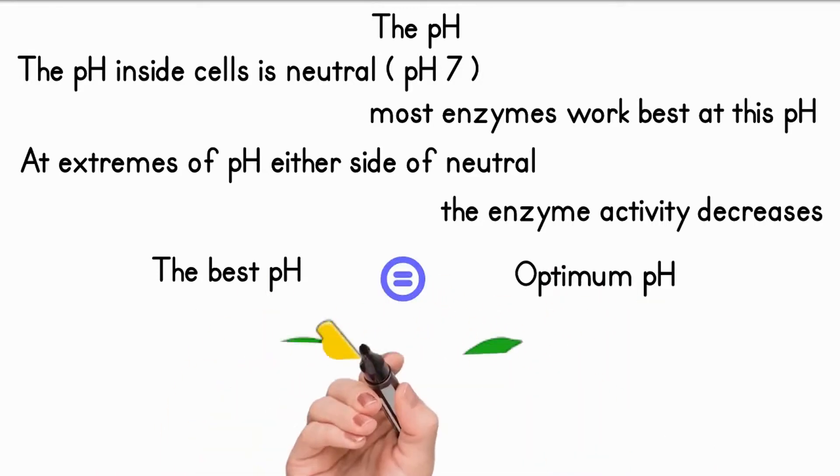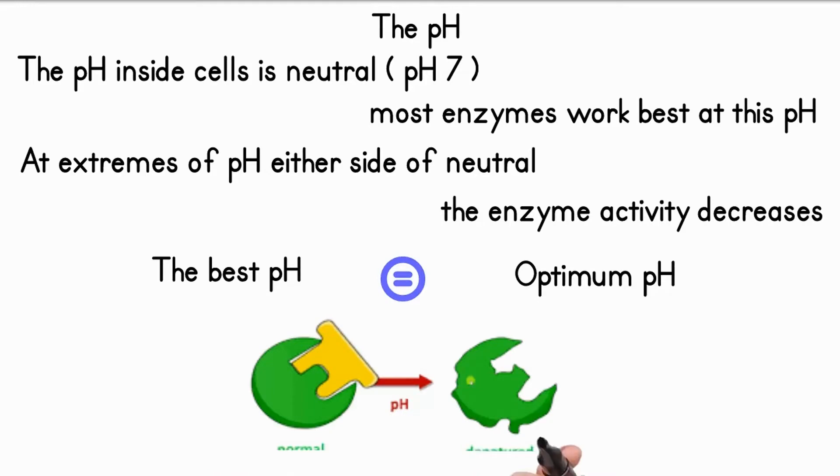Either side of the optimum, the pH affects the structure of the enzyme molecule and changes the shape of its active site so that the substrate will not fit into it so well.